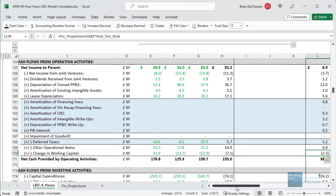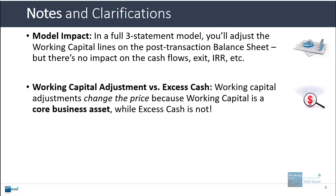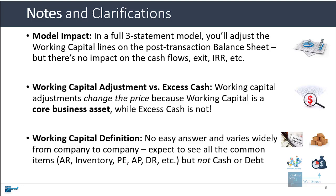Why do working capital adjustments affect proceeds to shareholders and price? It's because working capital is a core business asset — it's part of enterprise value — but excess cash is not. As for the definition of working capital, there's no short easy answer: it varies quite a bit from company to company. Common items include accounts receivable, inventory, prepaid expenses, accounts payable, and deferred revenue. Cash and debt tend to be excluded because they're not viewed as net operating assets core to the business.